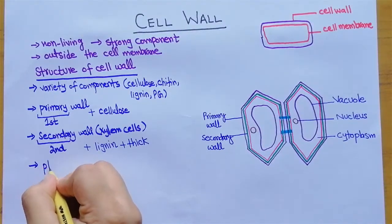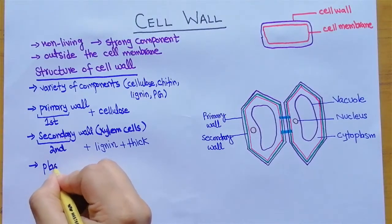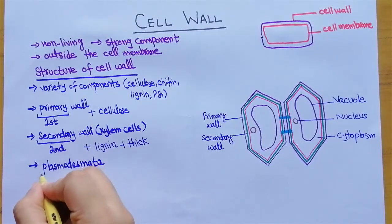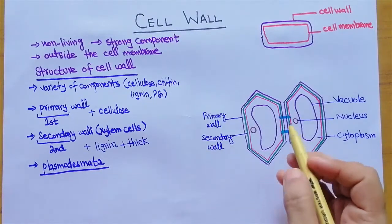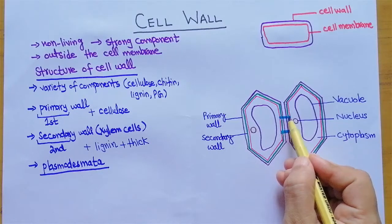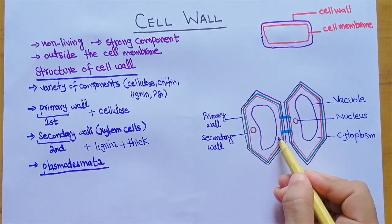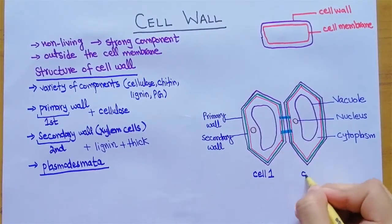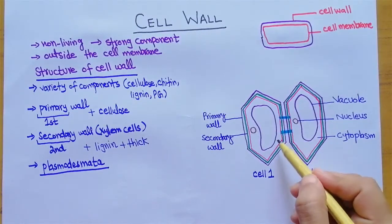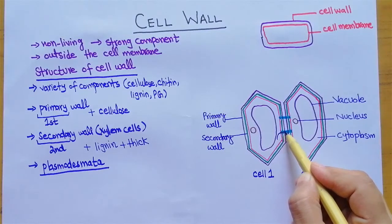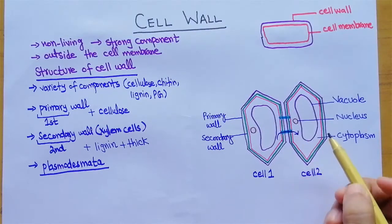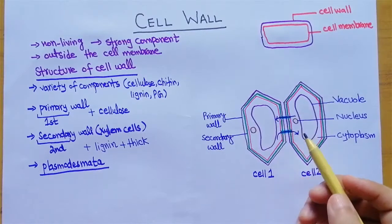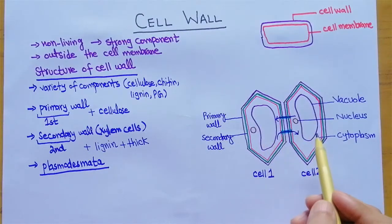The third thing is that the cell wall contains plasmodesmata. Plasmodesmata are actually pores in the cell wall through which the cytoplasm of one cell is connected to the cytoplasm of another cell. In other words, the cytoplasm through these pores goes from one cell and enters into another cell, allowing the exchange of material between adjacent cells.